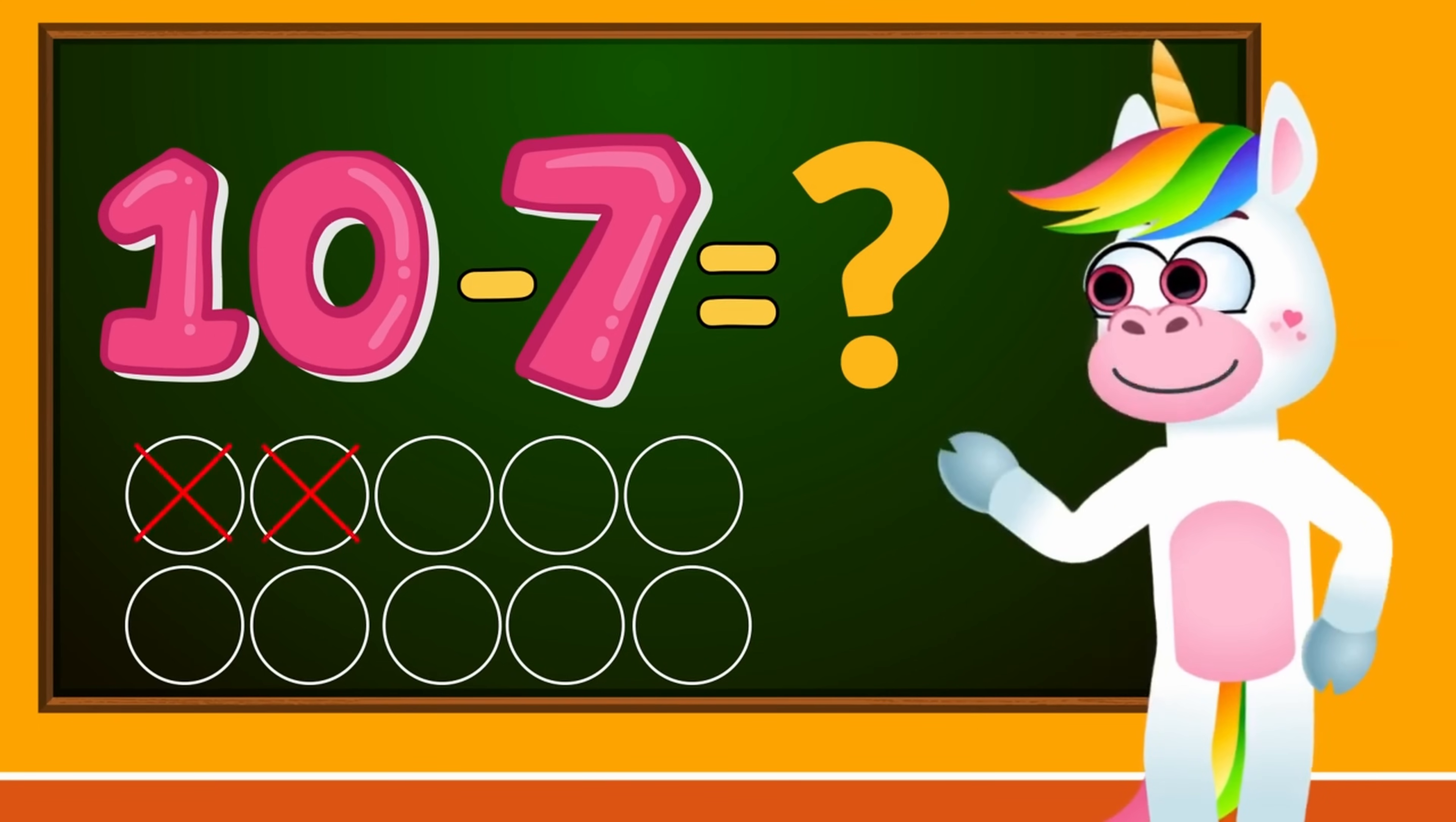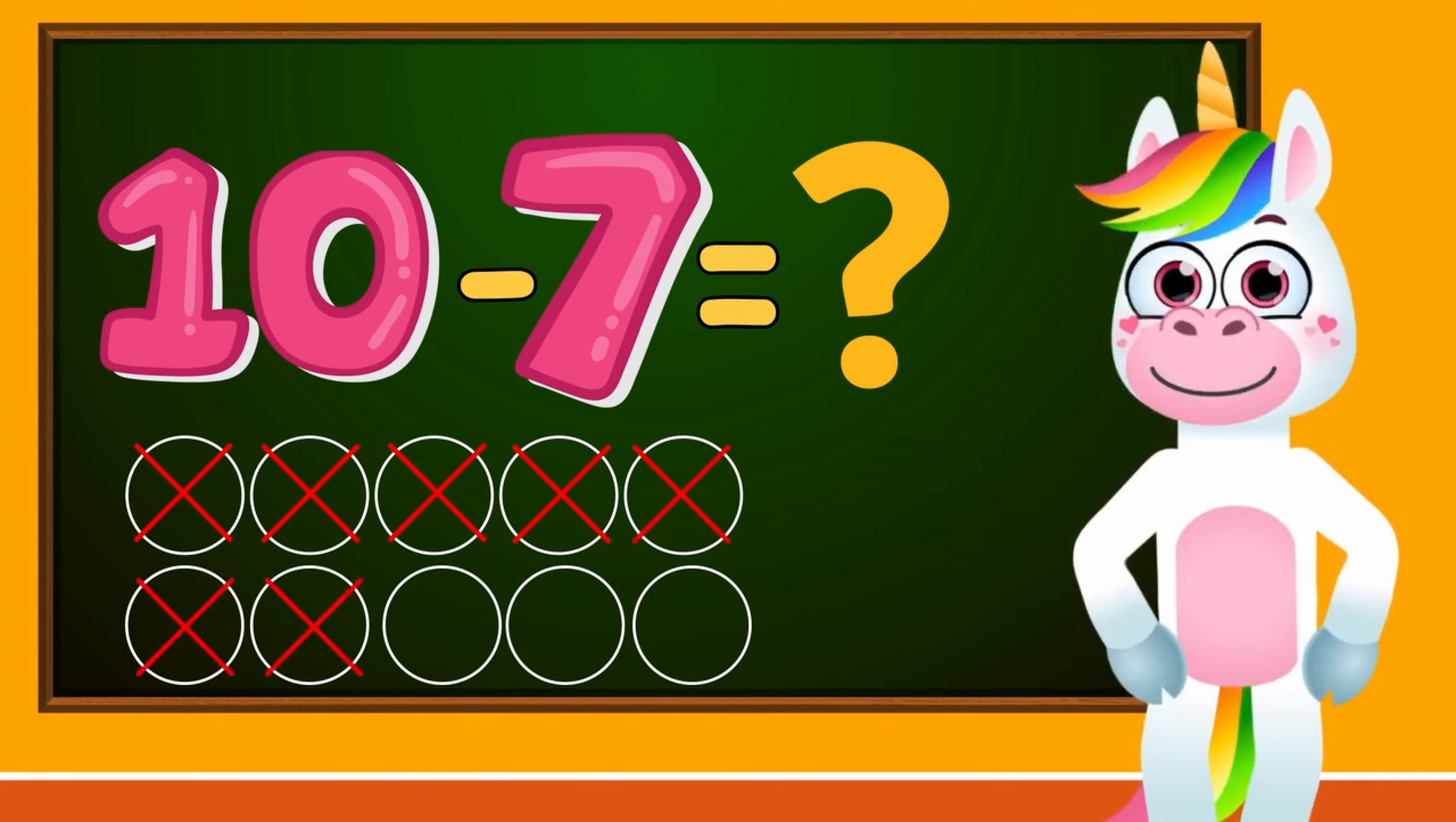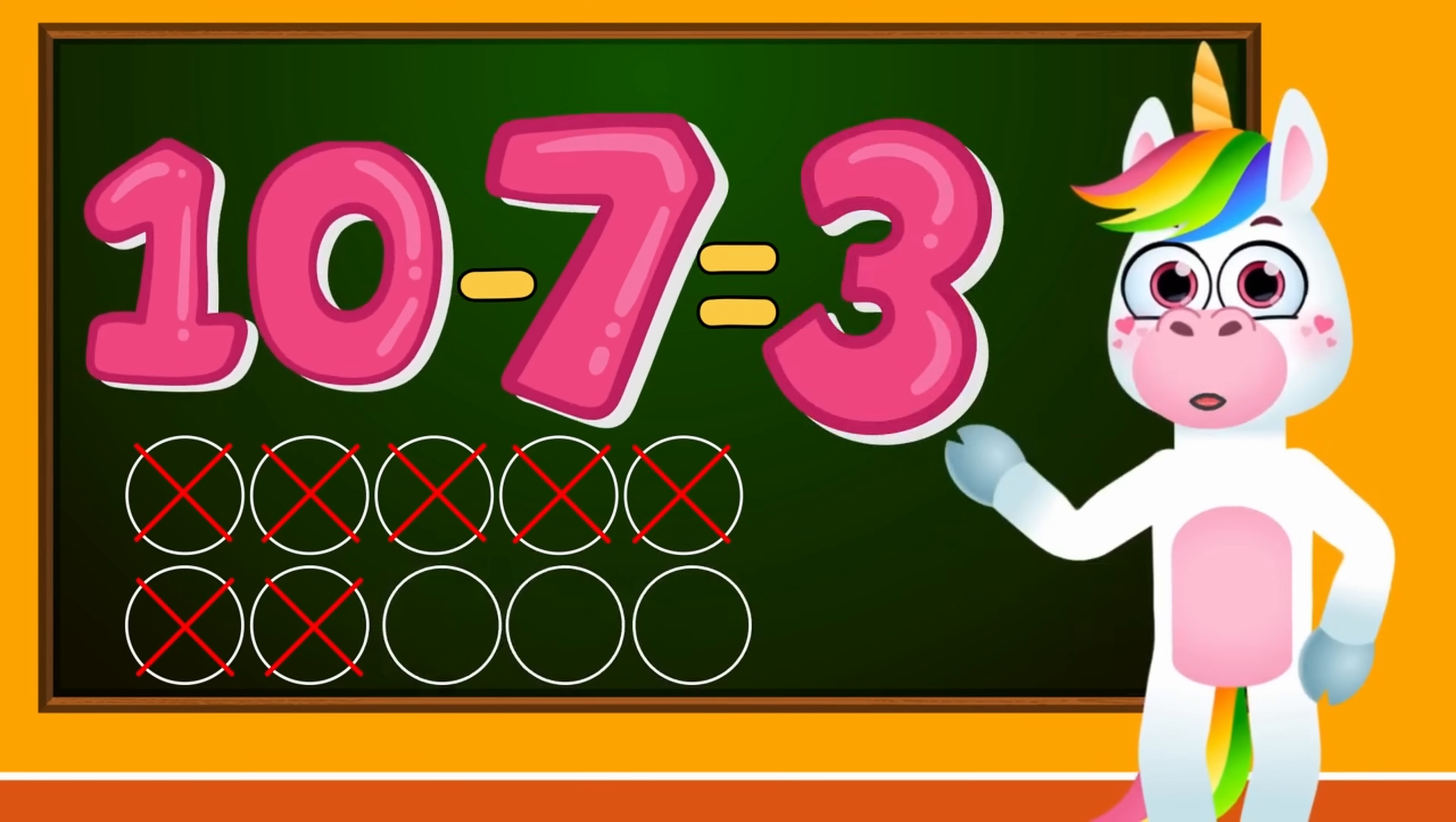1, 2, 3, 4, 5, 6, 7. How many circles are left, kids? We have 3 circles left. So kids, 10 minus 7 equals 3.